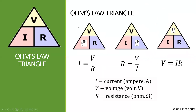It is easy to remember the Ohm's Law formula using the Ohm's Law triangle. For example, if the missing part is the current (I), you simply divide voltage by the resistance. And if the missing part is voltage, voltage equals I multiplied by R.